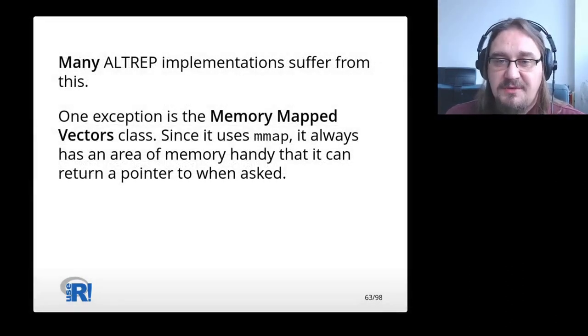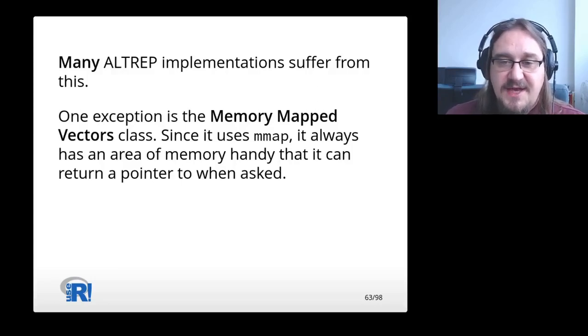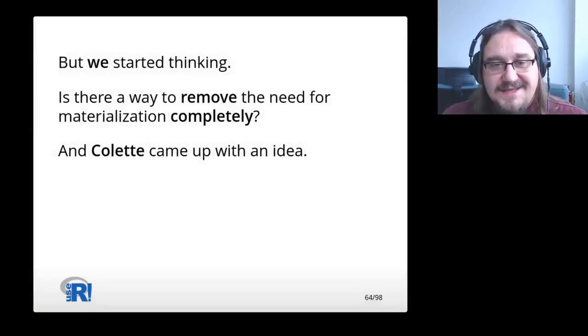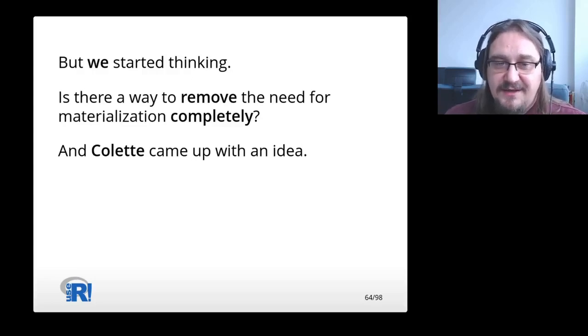Many Altrep implementations suffer from this. One exception is the memory mapped vectors class. Since it uses mmap, it can always have an area of memory handy that it can return a pointer to when asked. But we started thinking, is there a way to remove the need for materialization completely? And Colette came up with an idea.